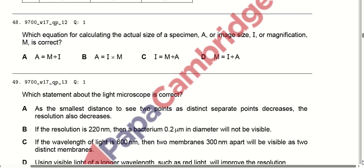The basic equation for calculating the actual size of a specimen, image size, or magnification — which formula is correct? As we have read earlier in the syllabus, option D is correct.